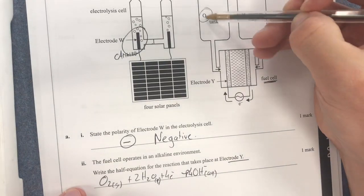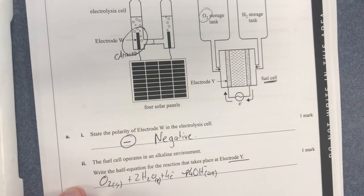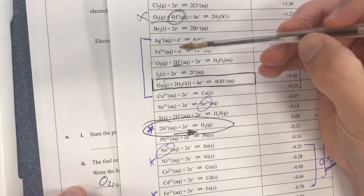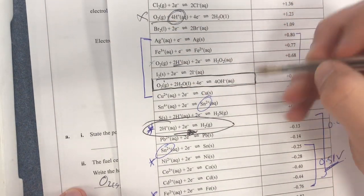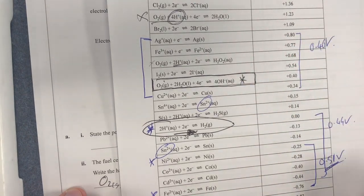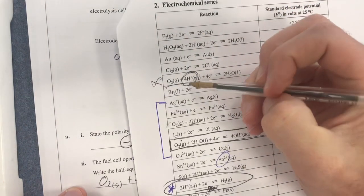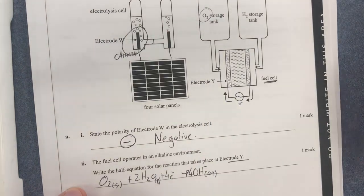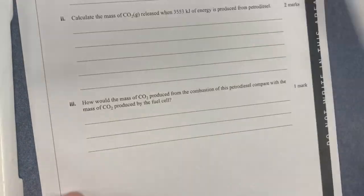So therefore we have our half equation. Again, why? Because I know that that is where oxygen is reacting. And I go straight to my electrochemical series and I work out if oxygen reacts in an alkaline environment, I'm going to be using this particular equation. Can't use this one because it would be acidic.